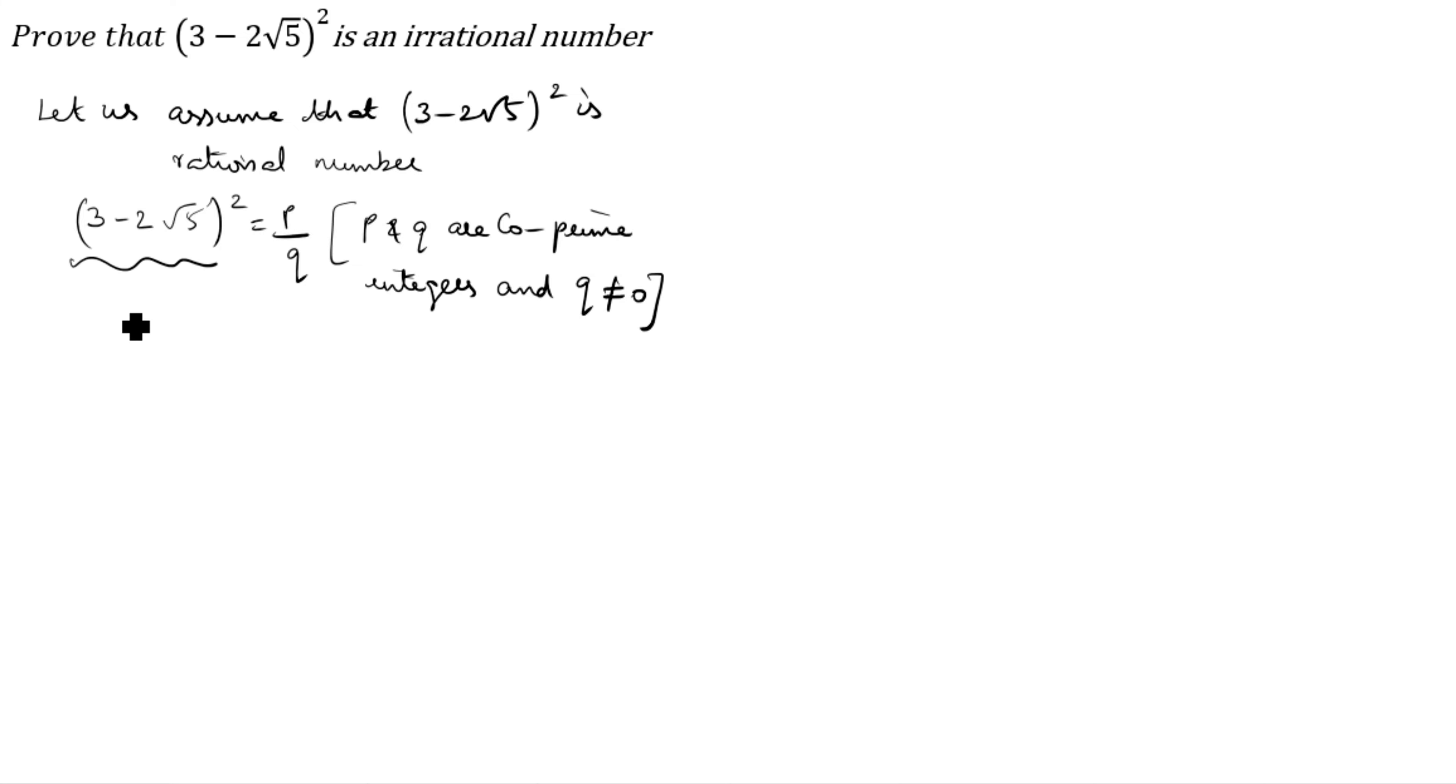We have to split this 3 minus 2 root 5 the whole square. This is A minus B the whole square form. What is the A minus B the whole square formula? A square minus 2AB plus B square. What is A in this case? A is equal to 3, B is equal to 2 root 5.